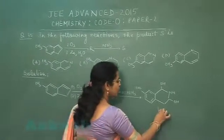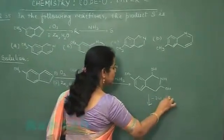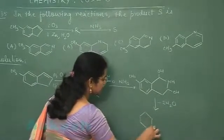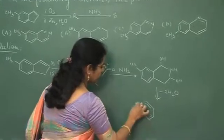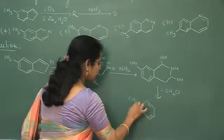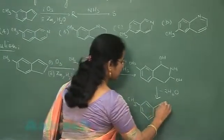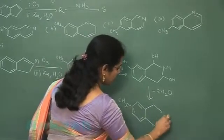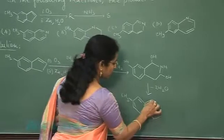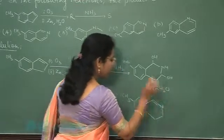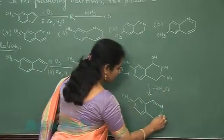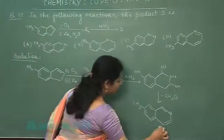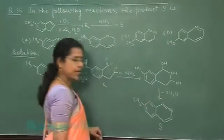This compound will immediately lose two moles of water. See the structure. This ring will remain as such. After the loss of two moles of water, double bond will form at this position and one double bond at this position. So this is the structure of compound marked as S.